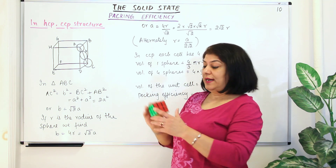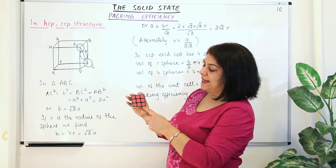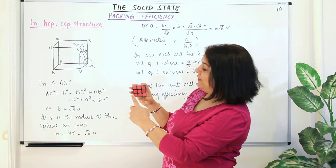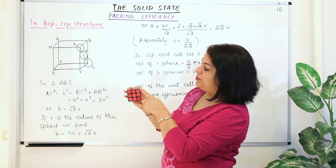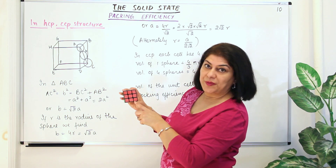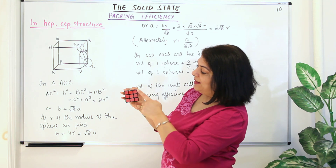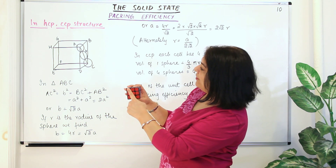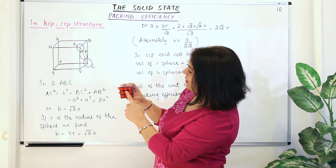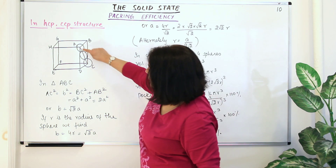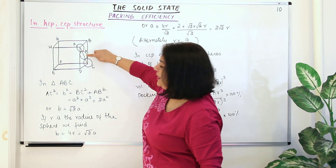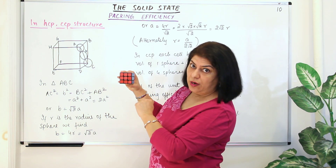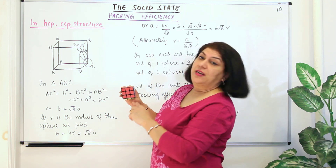Triangle A, B, C is a right-angled triangle. If this is A at the top, then B is one corner and C is the other, and AC is the hypotenuse. The right angle is at B, and along the hypotenuse we have the sphere at A, the sphere in the middle, and the sphere at C. So we have three spheres touching each other along the face diagonal — the hypotenuse of this right-angled triangle — and we know the Pythagorean theorem.